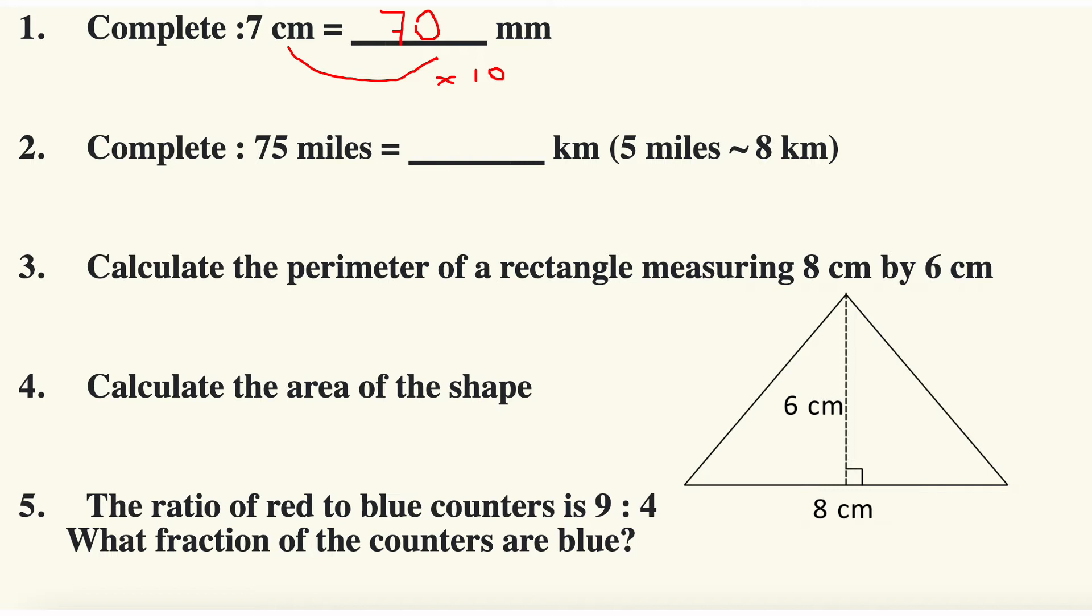This is question number two: complete this statement, 75 miles is how many kilometers? Well, five miles is approximately eight kilometers, so five times 15 is 75, therefore eight times 15 will tell me the number of kilometers. So let's work it out: eight times 15, well eight times five is 40, so zero carry the four, one times eight is eight add the four is 12, so it's 120 kilometers.